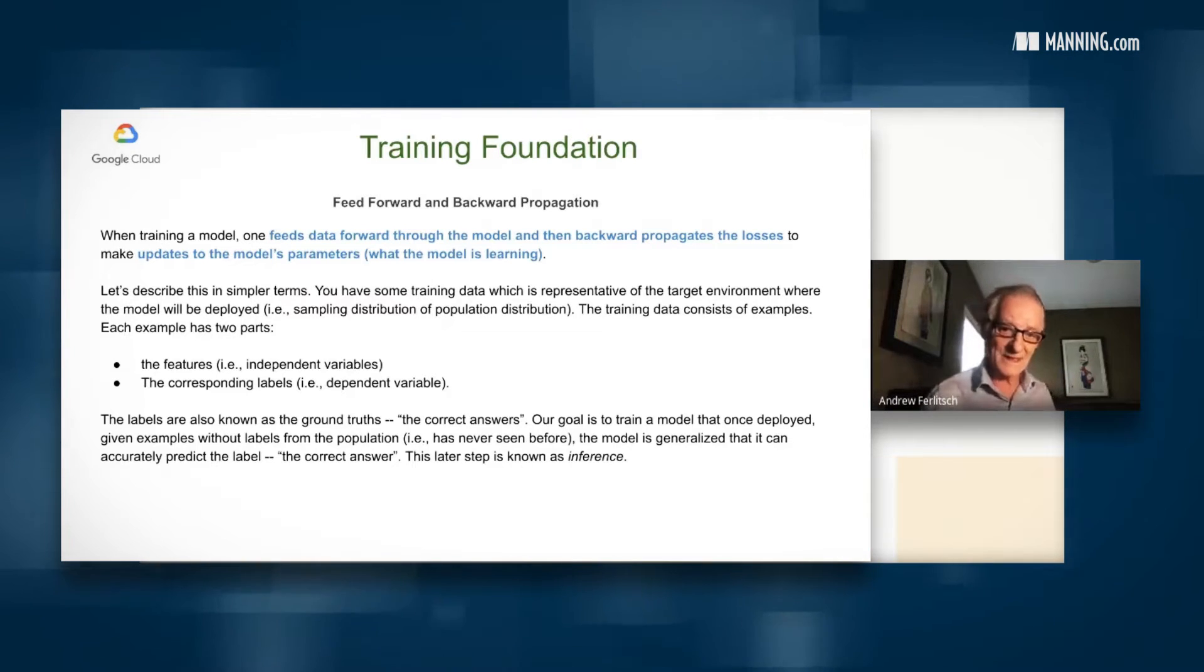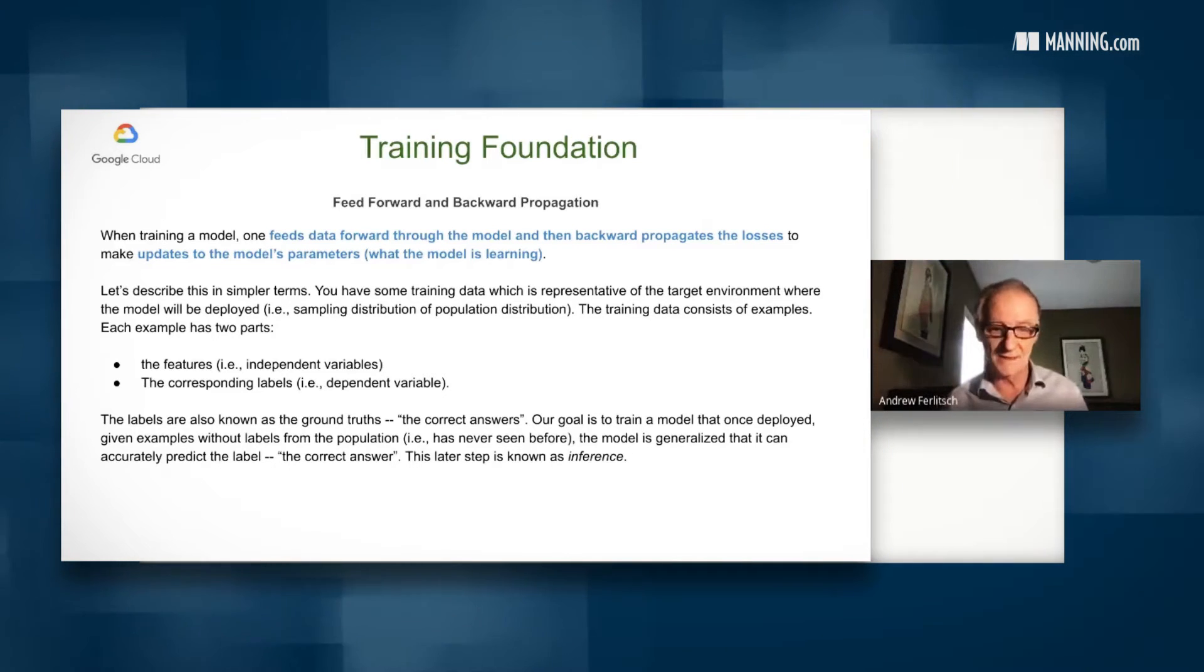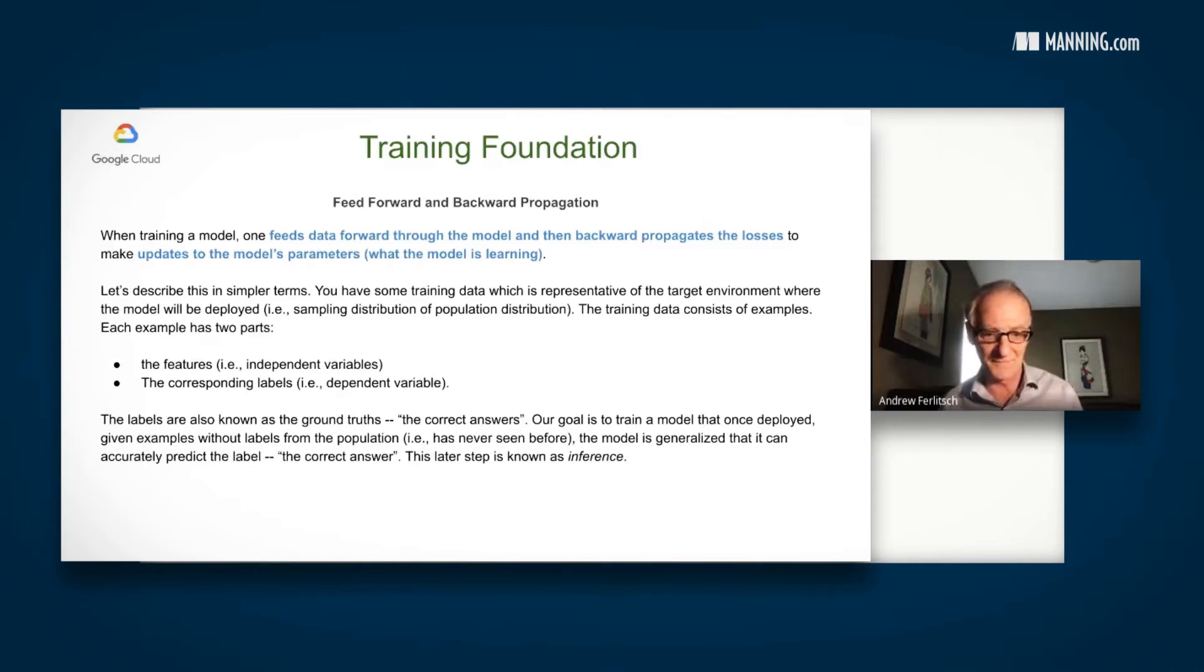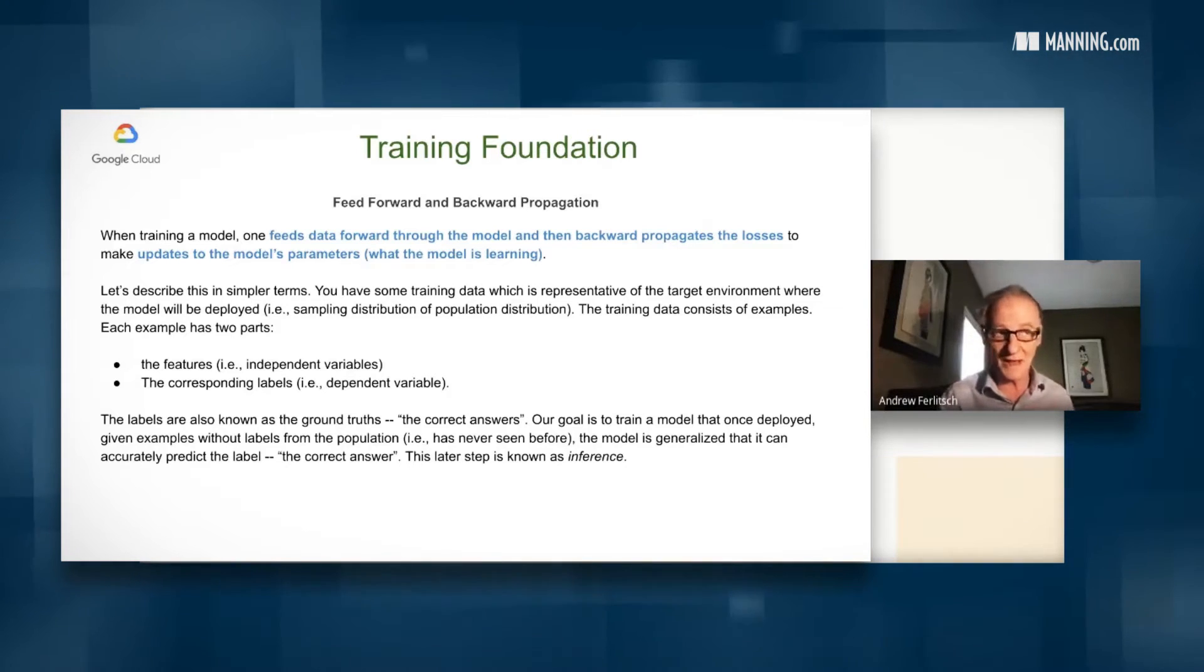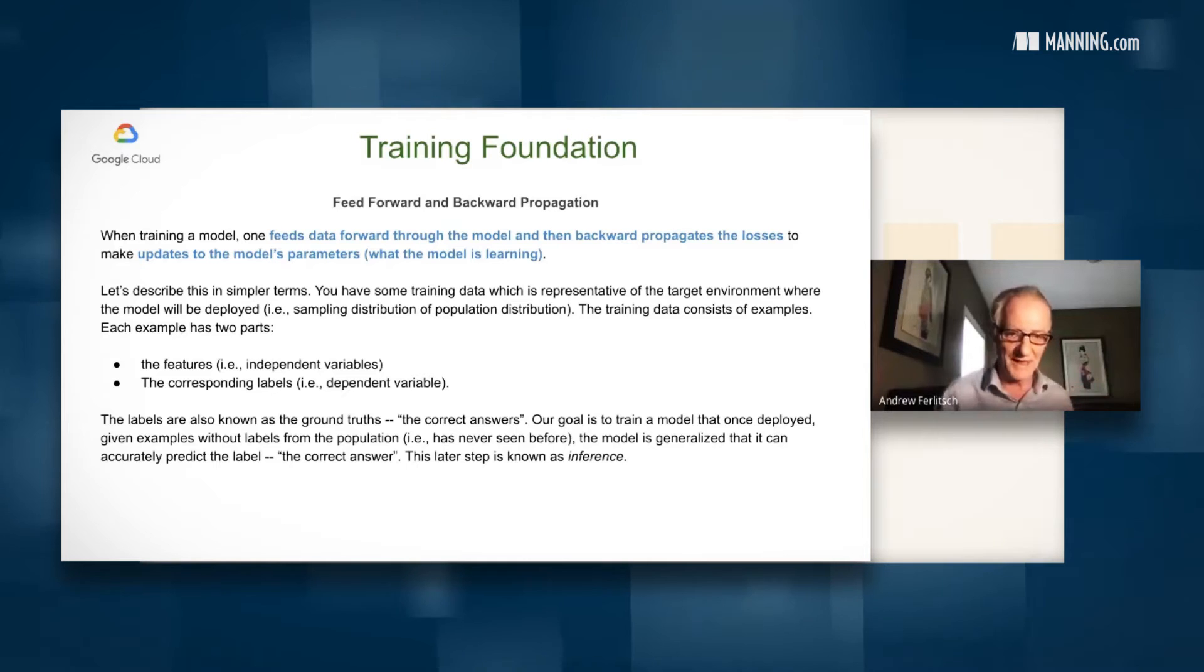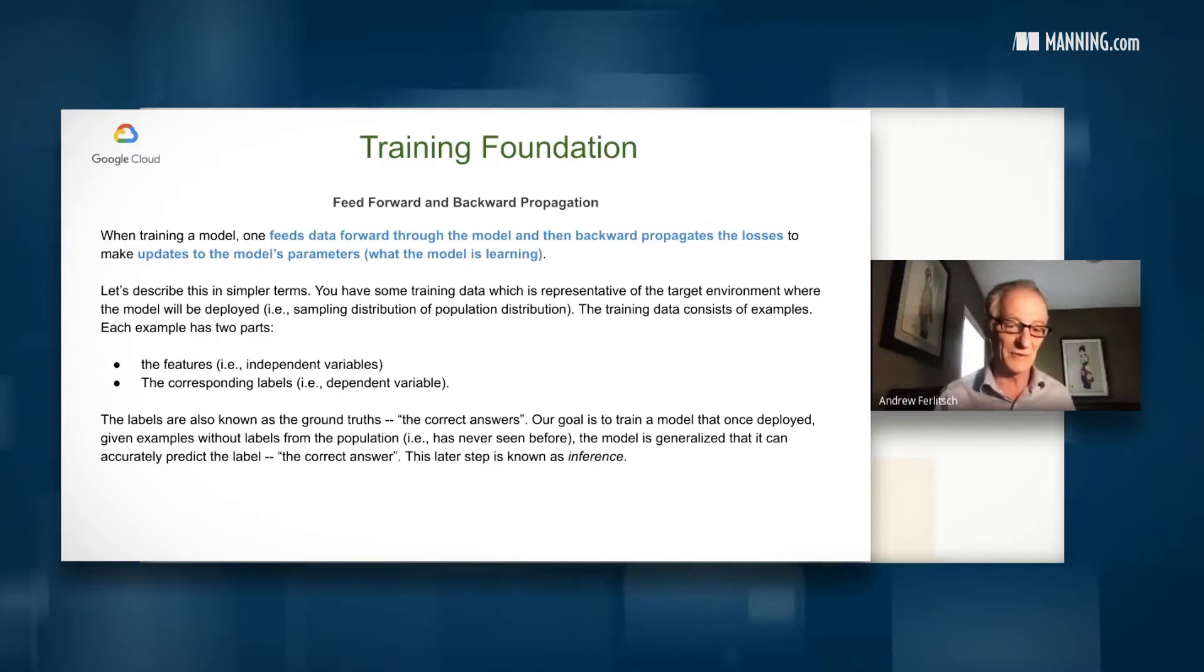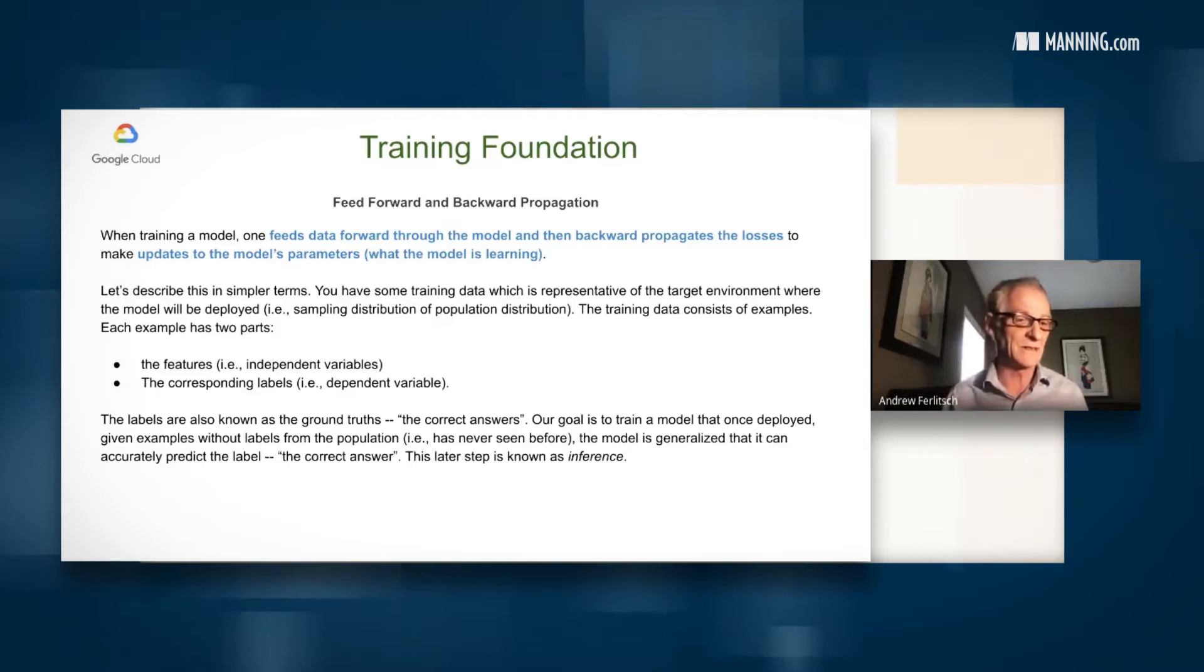Now that data set or that training data is going to consist of two parts. The features, which are also known as the independent variables, and in the case of computer vision, those are your images, and the corresponding labels, also known as the dependent variable and sometimes referred to as the ground truth, the correct answer. So our goal, of course, is to train the model that once it deploys, given examples without the labels, the ground truth, from the population that it has never seen before, the model is generalized and it can accurately predict the label, the correct answer. And this latter step is known as inference.